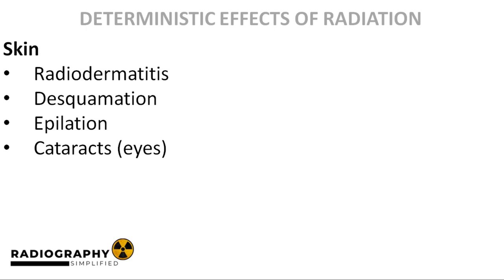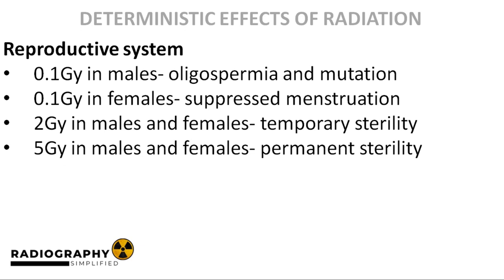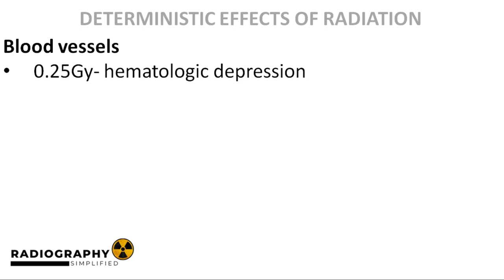Excessive exposure to the eyes also causes cataracts. The reproductive system is quite radiosensitive. In males, gonadal doses as low as 0.1 gray can cause a reduction in sperm cells and mutation of available sperm cells, which could lead to genetic mutations in future generations. In females, a gonadal dose of 0.1 gray can suppress menstruation. In both males and females, a gonadal dose of 2 gray can cause temporary sterility, while doses of 5 gray would cause permanent sterility. A whole-body dose of 0.25 gray would cause a reduction in the number of circulating blood cells, a condition known as hematologic depression. This is different and not as severe as the hematopoietic sub-syndrome of acute radiation syndrome.